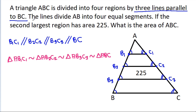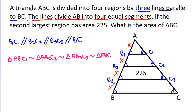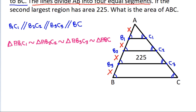And the lines divide AB into four equal segments. That means if AB1 is X, then B1B2 will be X, B2B3 will be X, and B3B will be X.